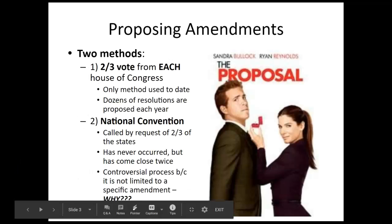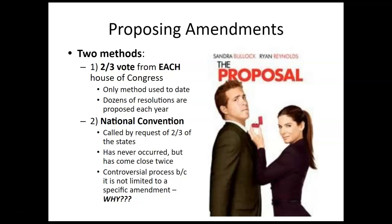So, proposing amendments. The first method for proposing them in Congress is a two-thirds vote from each House of Congress — the House of Representatives needs at least a two-thirds vote, and so does the Senate. This has actually been the only method used to date for an amendment to be proposed. There are dozens of resolutions proposed each year, but with only 27 amendments, very few get even past the proposal process.